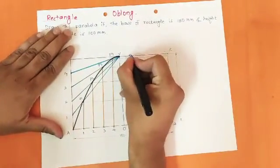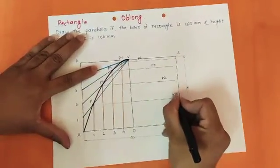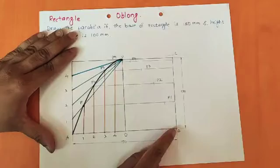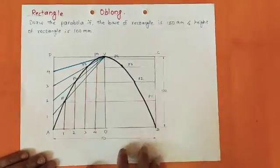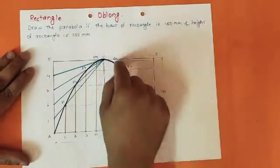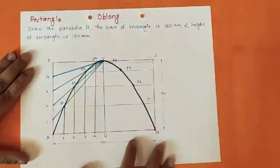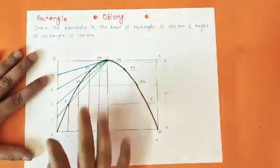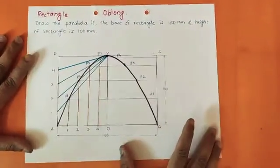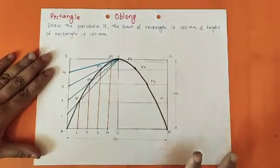Name the mirrored points as P4, P3, P2, P1 on the right side. Then draw a smooth curve from V through these points to point B. You now have a complete parabola passing through point V. Draw all construction lines with a 2H pencil and draw only the final locus curve dark with an HB pencil. Add the given dimensions as part of dimensioning to get full marks. This is the parabola by the rectangle method.